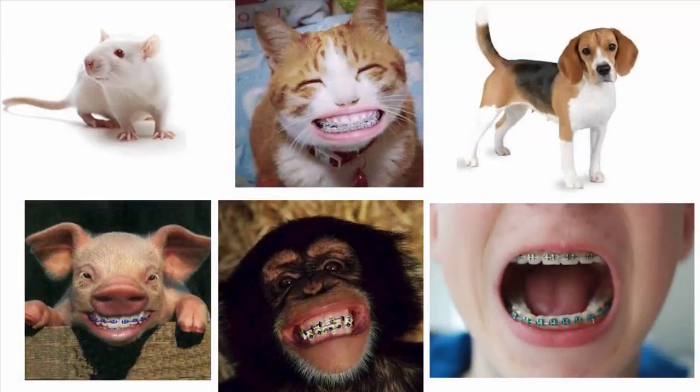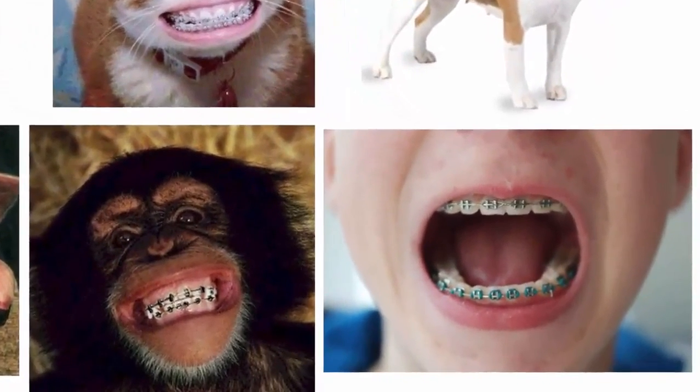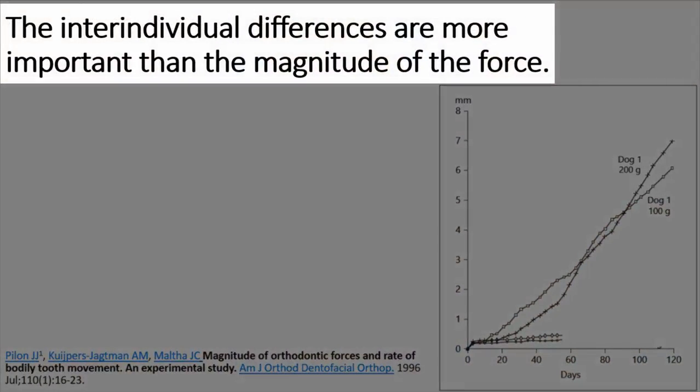You can do experiments on rats, cats, pigs, dogs, rabbits, monkeys and humans, and the results of optimum force will be similar. That is, the inter-individual differences are more important than the magnitude of the force.